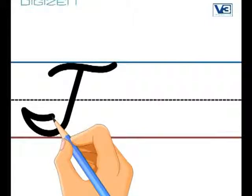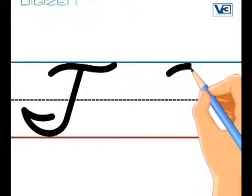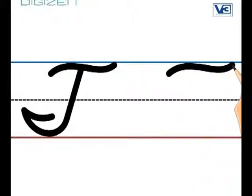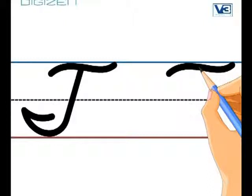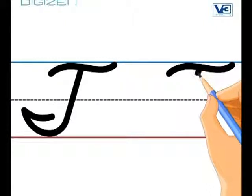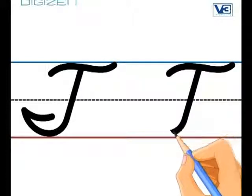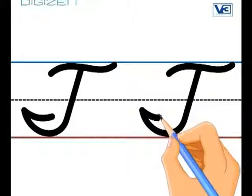Now you try it. Remember start below that top line. Go up, down and up. Go to the middle of that little curvy line and zoom down back and towards your zoom line for your uppercase T.